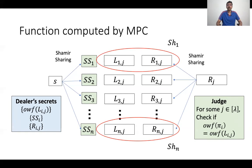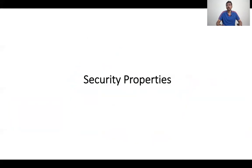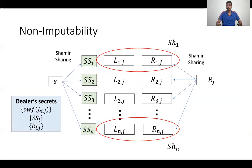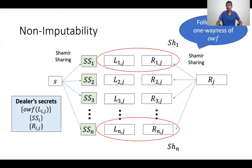Given this construction, let's see why it satisfies non-imputability and traceability. For non-imputability: to prove that a server had cheated, the dealer has to produce a pre-image of this one-way function. From the security of the multi-party computation, we can ensure that the only information the dealer gets about the server secrets are the one-way function values applied on the server secrets — these Lijs. So in order to implicate an honest server, the dealer has to invert this one-way function, and non-imputability just follows from the one-wayness of OWF.